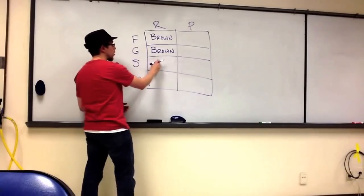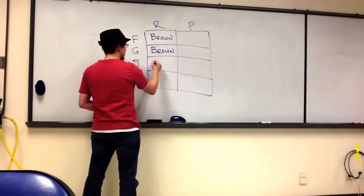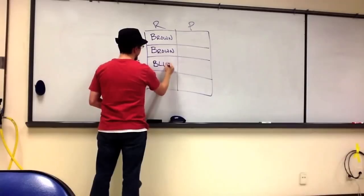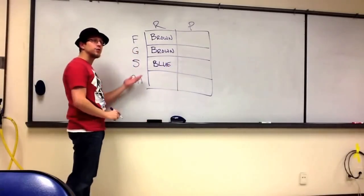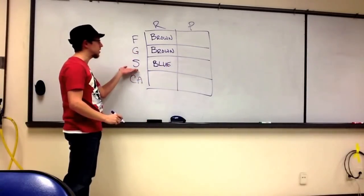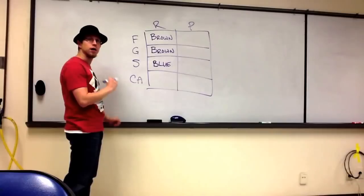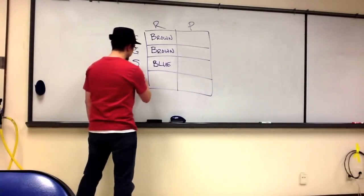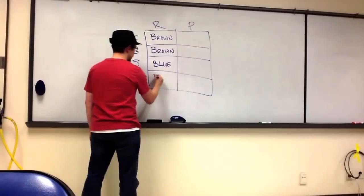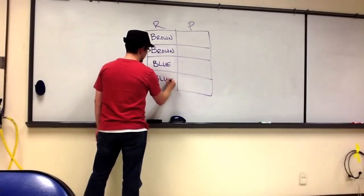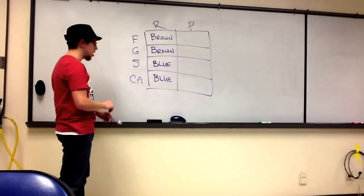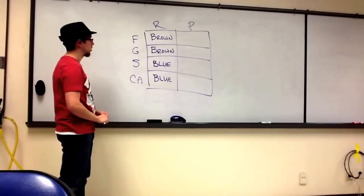We add sucrose to Benedict's reagent, and it stays blue, even when we boiled it, signifying that sucrose, even though it's a disaccharide, is not a reducing sugar. It does not have a free carbonyl group. Citric acid also remains blue. Citric acid is therefore not a reducing sugar.